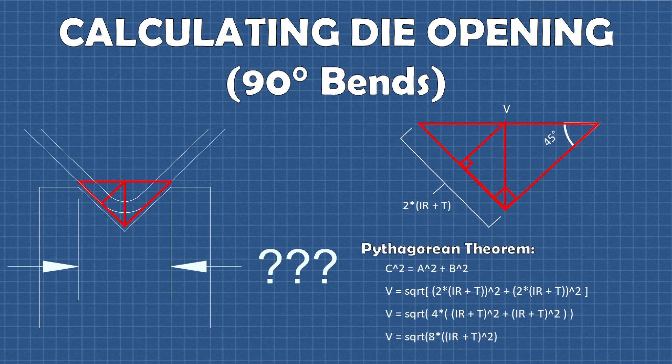Once we know this, it's just a matter of using the Pythagorean Theorem to solve for the hypotenuse, which is what we are after. Plugging in our variables and doing a little bit of algebra gives us this simplified equation for solving for the optimal die opening size of a 90-degree bend.